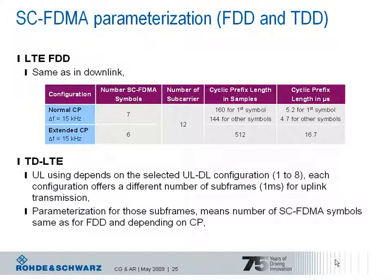As already mentioned by Christina, LTE uses two modes: frequency division duplex (FDD) and time division duplex (TDD). The parameterization in the uplink for FDD is the same as in the downlink. The two different cyclic prefixes — normal and extended — are used, giving 6 or 7 single carrier FDMA symbols in the uplink respectively. For TD-LTE, the usage of the uplink depends on the selected uplink-downlink configuration, with each configuration offering a different number of subframes assigned for uplink transmission. The parameterization of those subframes is equal to FDD mode and depends on the selected cyclic prefix.